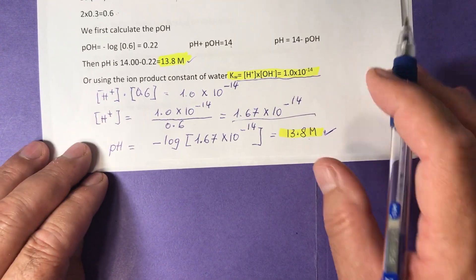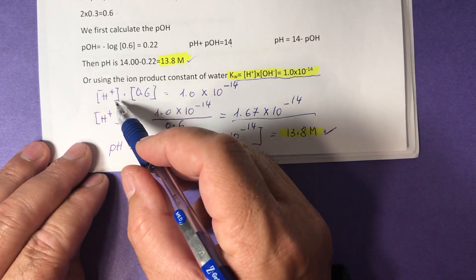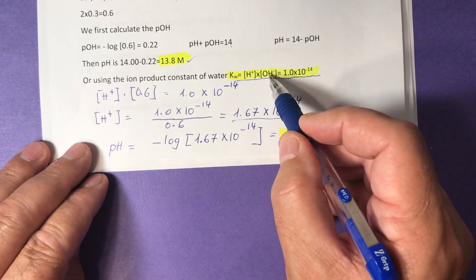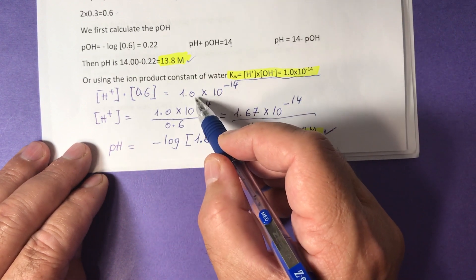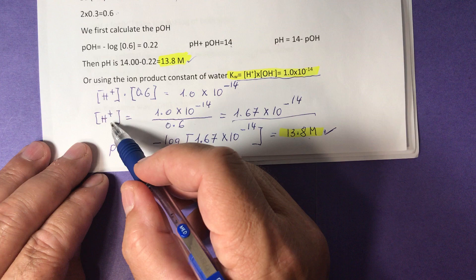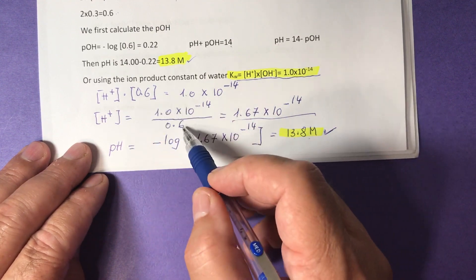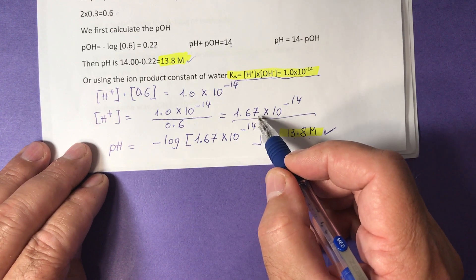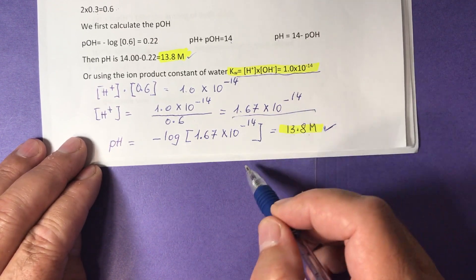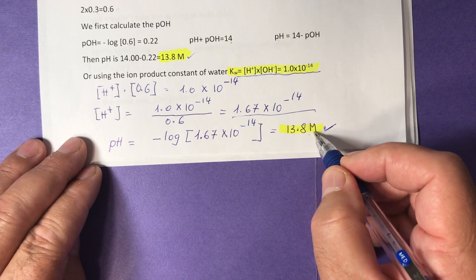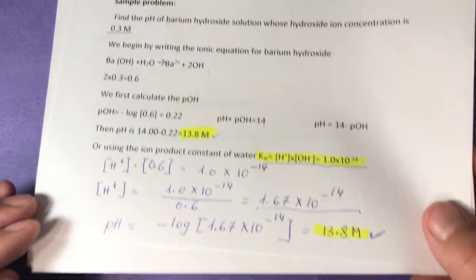Or we can use another approach. We can use the water constant here. H+ times OH-, which is the concentration of hydroxide ions, 0.6, equals 1.0 times 10 to negative 14. We solve for H+ concentration here by dividing by 0.6, and we get the concentration 1.67 times 10 to negative 14. pH is negative log of concentration, and we get at the end 13.8 molar. So we have the same result going through different ways.